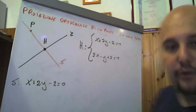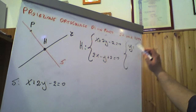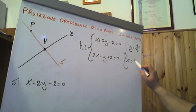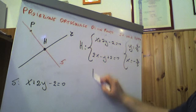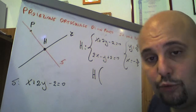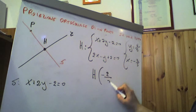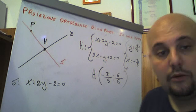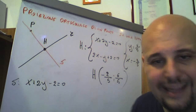Risolvendo, troviamo il punto H di ordinata pari a 6/5 e ascissa x pari a -2/5, risolvendo magari con le mosse di Gauss. Quindi la proiezione ortogonale H di un punto P sulla retta R avrà coordinate (-2/5, 6/5). Questo è un concetto importante di proiezione ortogonale di un punto P sulla retta R.